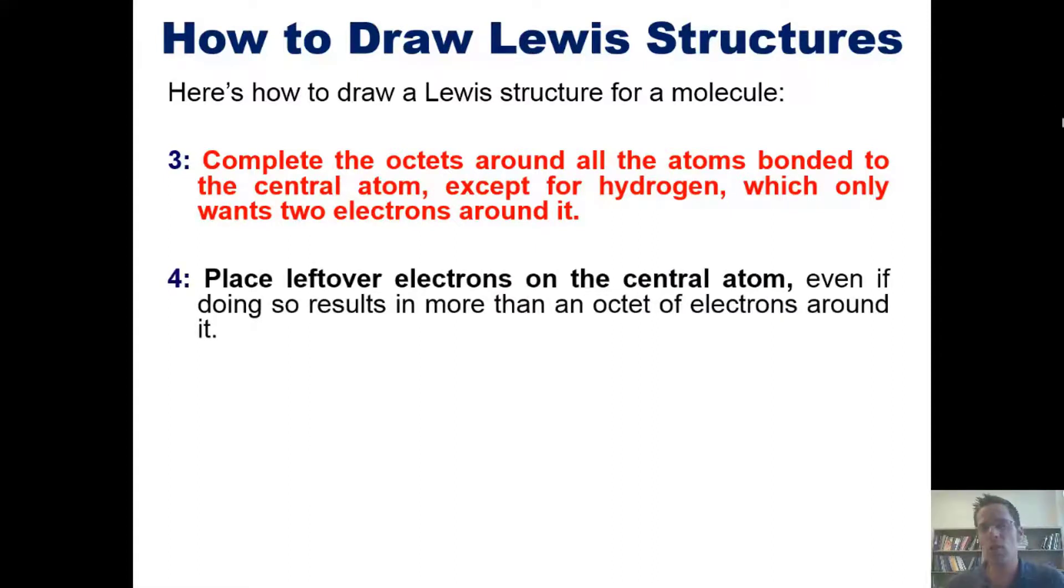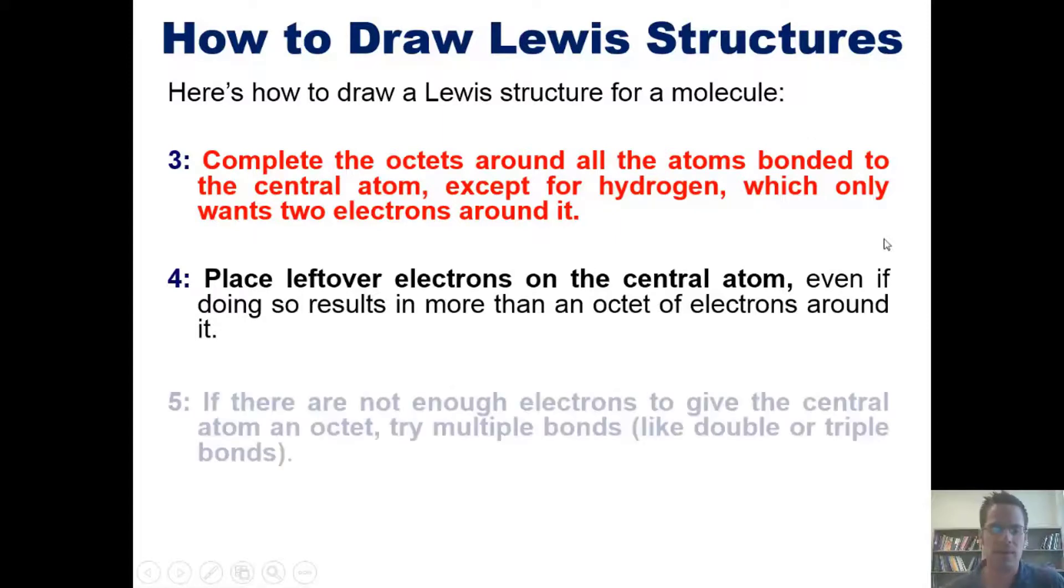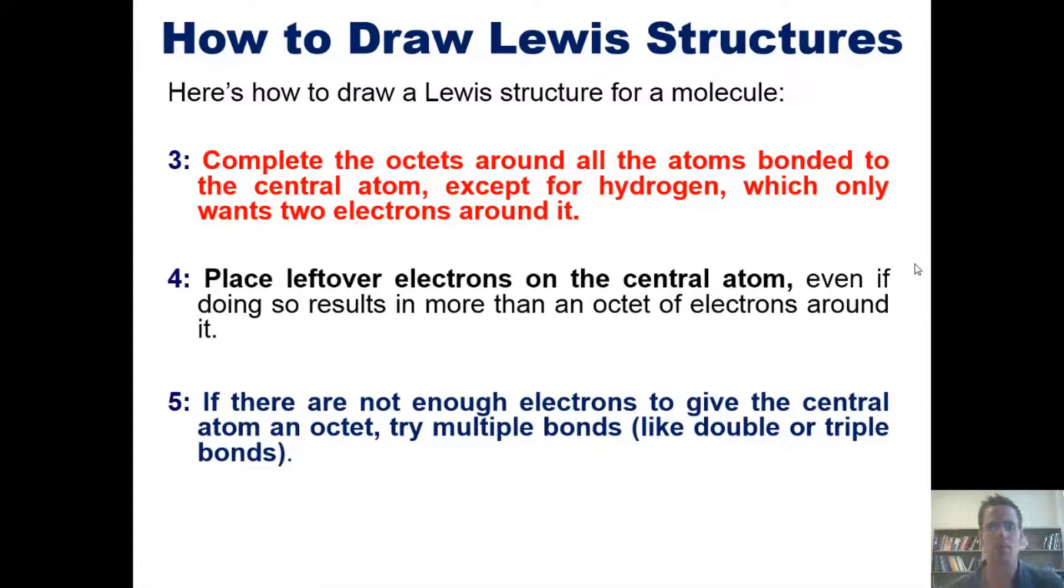Four, place leftover electrons on the central atom, even if doing so results in more than an octet of electrons around it. And five, if there are not enough electrons to give the central atom an octet, try multiple bonds, such as double or triple bonds.